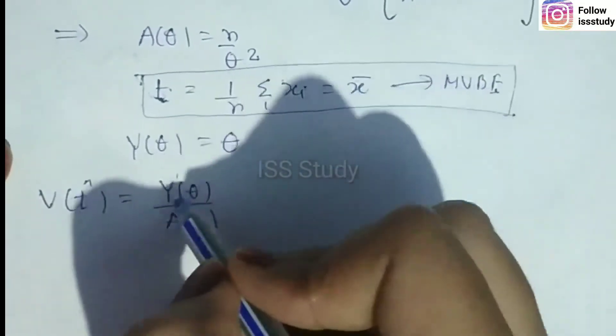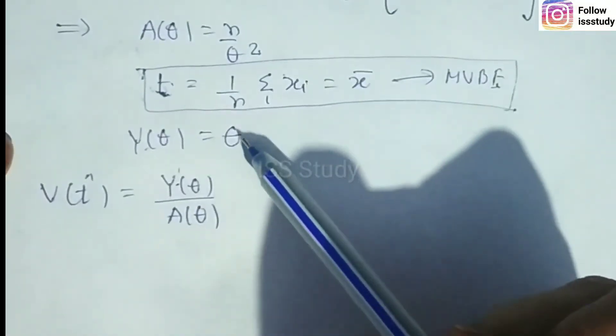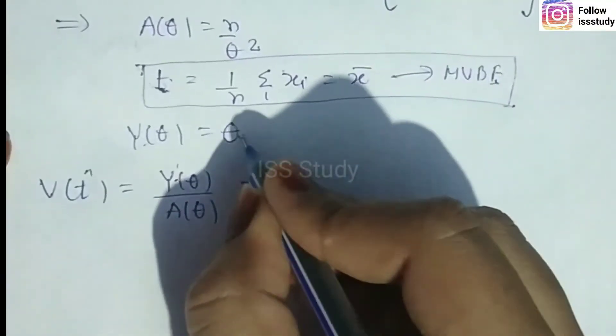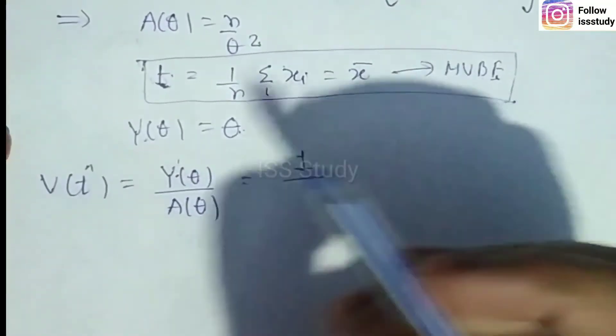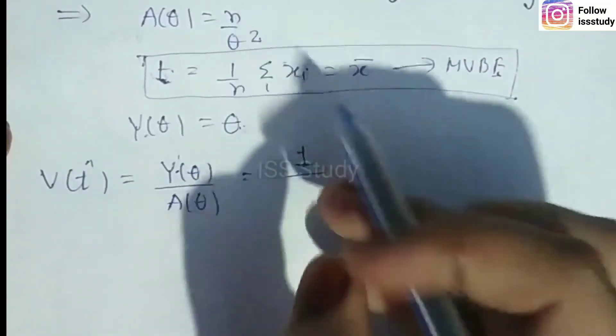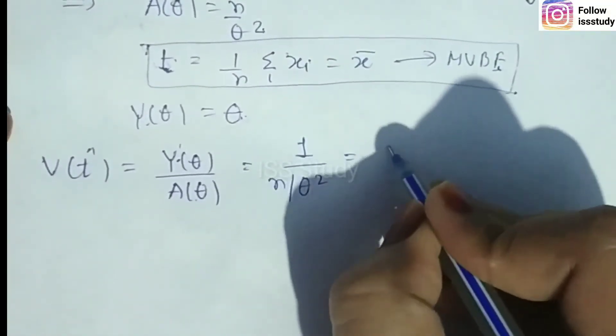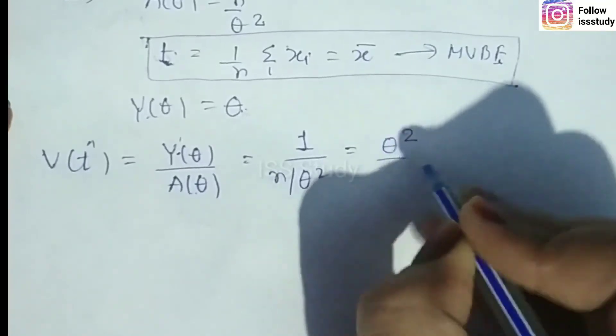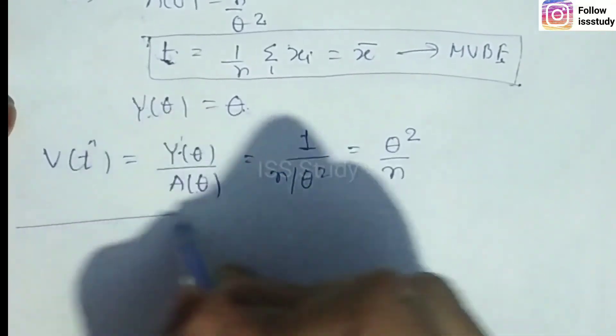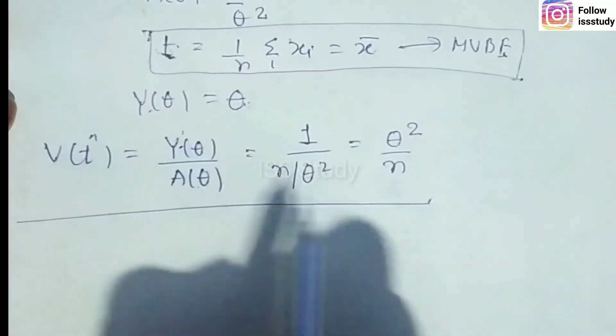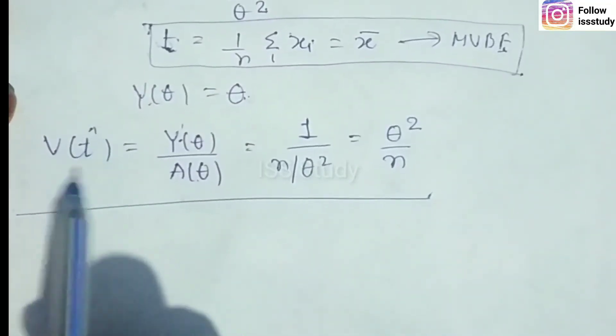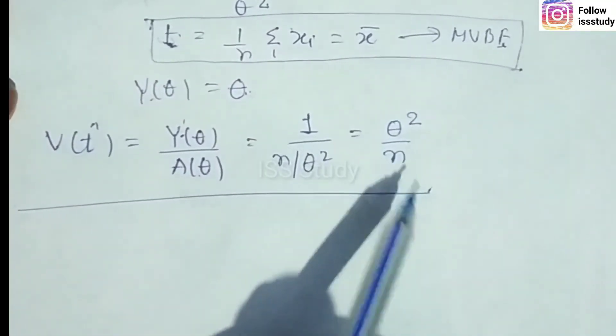When we differentiate γ with respect to theta, the value is 1. A(θ) is n/θ². When we substitute and simplify, it will be θ²/n. You can see how easily the variance of this unbiased estimator is θ²/n.